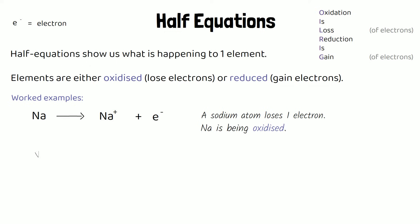We could also start with an ion instead of an atom. So if we start with a sodium ion plus e- makes Na. That half equation tells us that a sodium ion gains one electron. Now because reduction is gain of electrons, we could say that Na+ is being reduced. So whereas Na in the first equation was being oxidised, Na+ is being reduced.